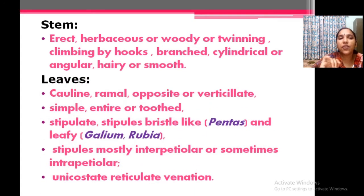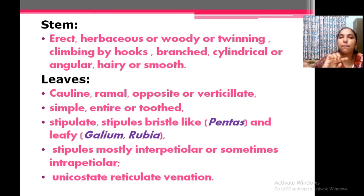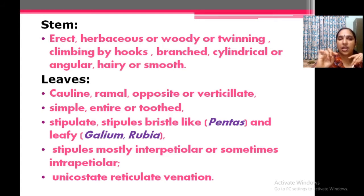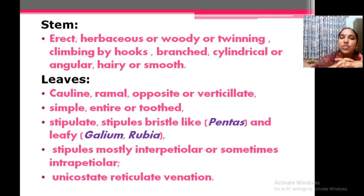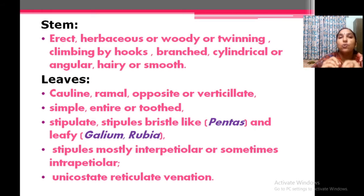About the leaves: leaves are cauline, that is attached on the stem, and hairy in some cases, opposite or verticillate. The leaves may be simple, entire or toothed — margins are serrated or toothed. Stipules are usually bristle-like. Stipules are very important in this family. By looking upon the arrangement, nature, or position of stipules, you can identify the members of this family.